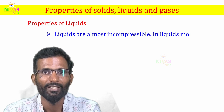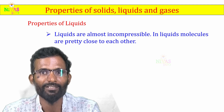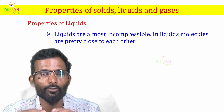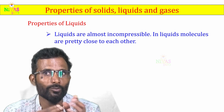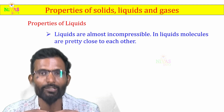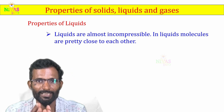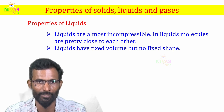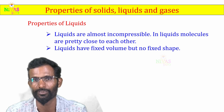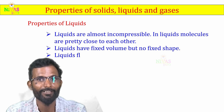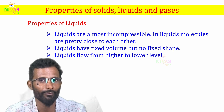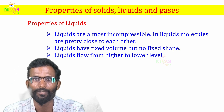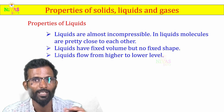Properties of liquids: Liquids are almost incompressible. In liquids, molecules are pretty close to each other, so there is a little bit of space between them. Liquids have a fixed volume but no fixed shape — they take the shape of the container but the volume remains the same. Liquids flow from a higher level to a lower level.